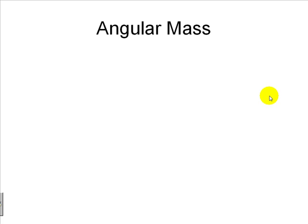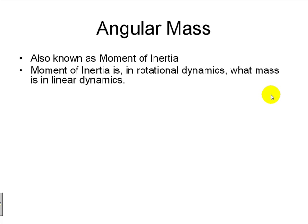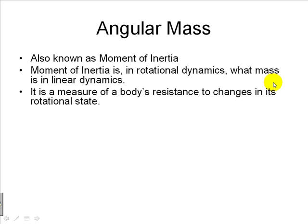Let's review now the concept of angular mass, also known as moment of inertia. A moment of inertia is, in rotational dynamics, the same thing that mass is in linear dynamics. It is a measure of the resistance of the body to changes in its rotational state — that is, to changes of its angular velocity. The symbols used by physicists for angular mass or moment of inertia are I or J.